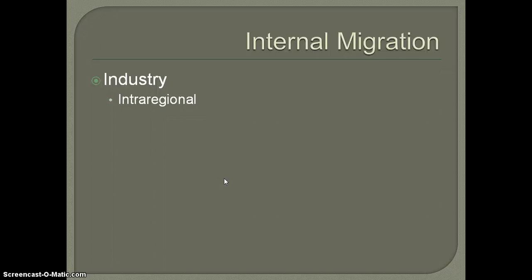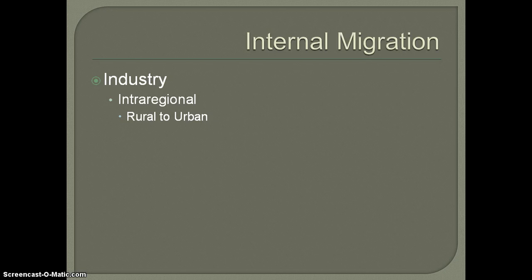When we look at intraregional migration — movement within a region — one of the initial factors that's going to cause people to move within the region is industry. We've seen this historically, especially in places where you maybe didn't have large cities before and yet had a lot of people employed in the agricultural sector. When you have industries begin to crop up, people are going to start moving into the cities for jobs. The initial movement is going to be from rural to urban.